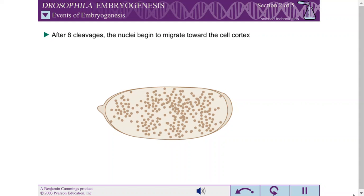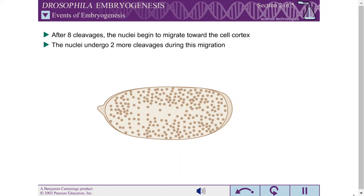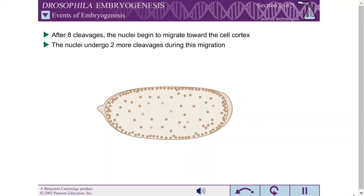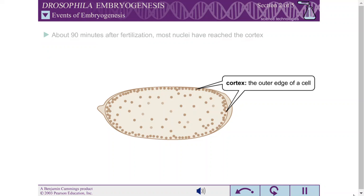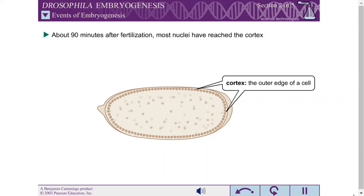After eight cleavages, the resulting 256 nuclei begin to migrate to the outer edge of the cell. During this migration, the nuclei undergo two more cleavages, resulting in 1,024 nuclei. Most, but not all, of these nuclei enter the cortical regions of the egg. About 90 minutes after fertilization, the majority of the nuclei have reached the cortex.